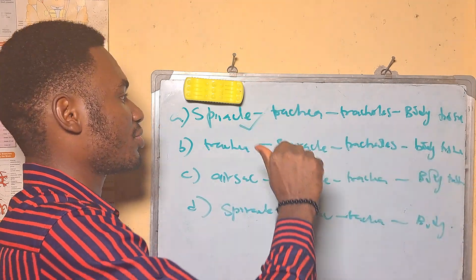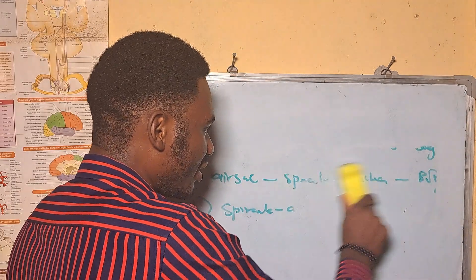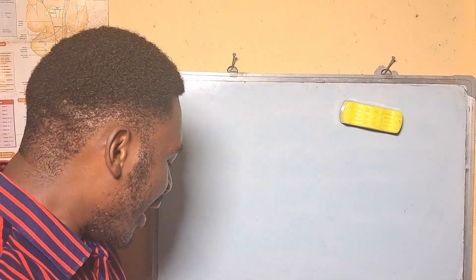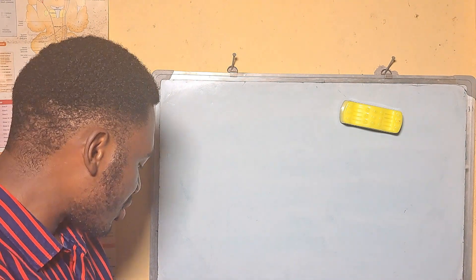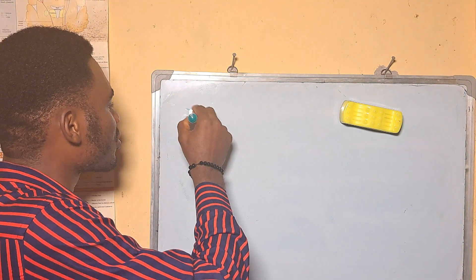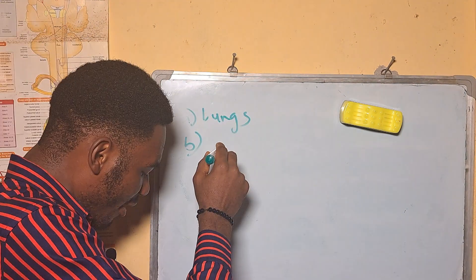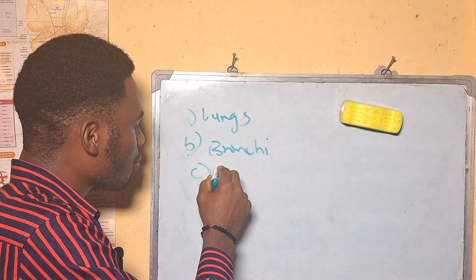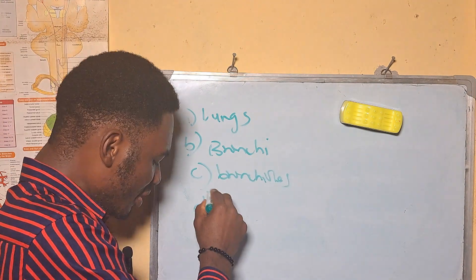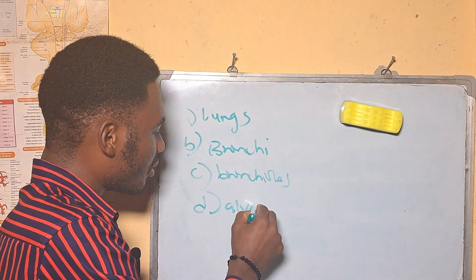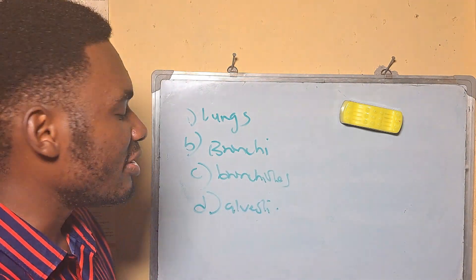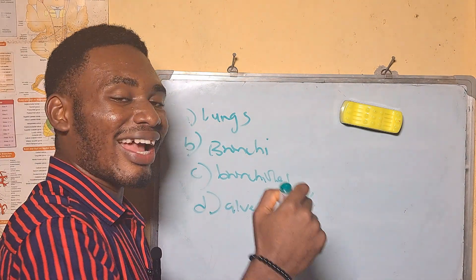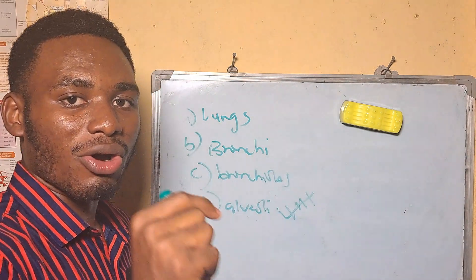In the mammalian respiratory system, exchange of gases occurs in — A: lungs, B: bronchi, C: bronchioles, D: alveoli. Our answer is D, alveoli — the alveoli are the terminal end of the bronchioles where gas exchange actually occurs in the lungs.